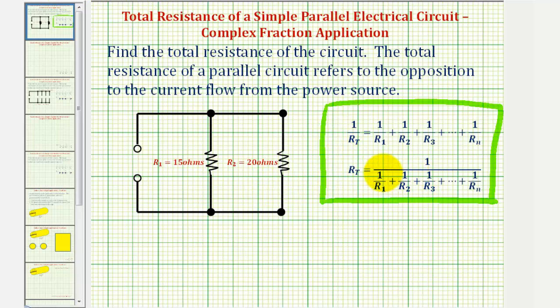So using the second formula, we would have r sub t, the total resistance, equals one divided by one over r sub one, or the reciprocal of r sub one, which would be one-fifteenth.